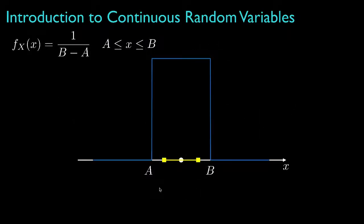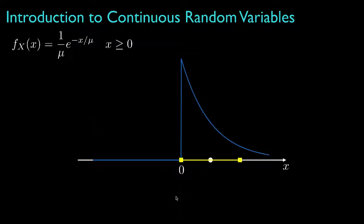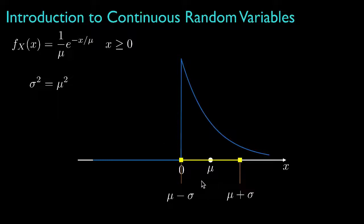Here's an example of a random variable called a uniform random variable, because its shape is uniform over the range from a to b. The expected value for a uniform random variable is the midpoint of the range. The variance is the square of the width divided by 12, which results in the region about the mean plus or minus one standard deviation shown here. An exponential random variable has a density with an exponential shape over the range of non-negative numbers. The parameter mu is the mean, and the variance turns out to be equal to the square of the mean, with a corresponding spread about the mean shown here.